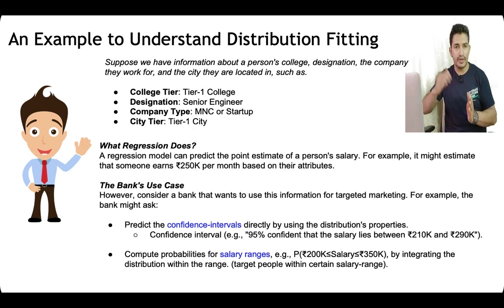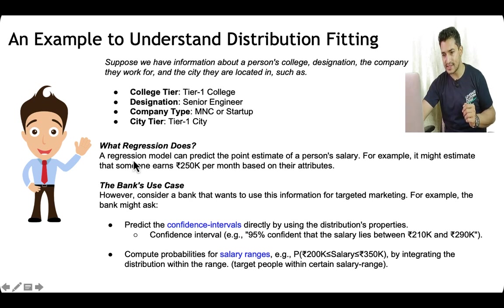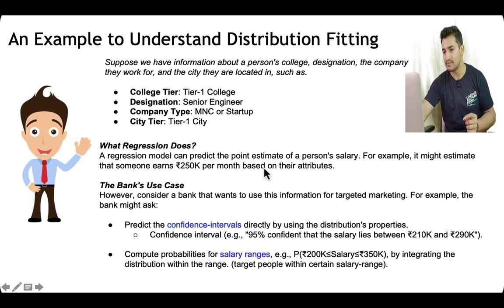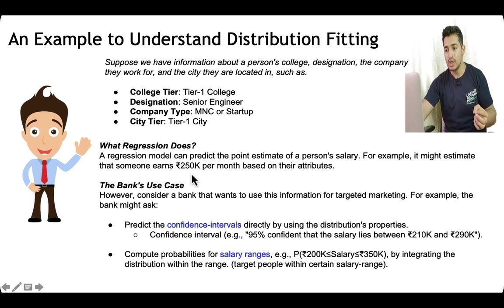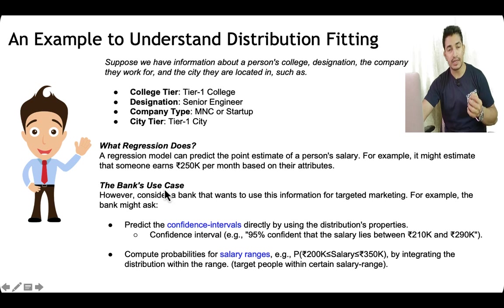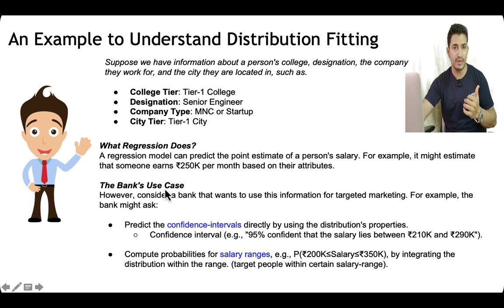Given these basic details, we can try to have a point estimate by fitting a regression. A regression model can predict the point estimate of a person's salary — for example, it might estimate that someone earns 250k rupees per month based on their attributes. But the point estimate is not always good enough.